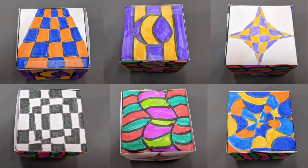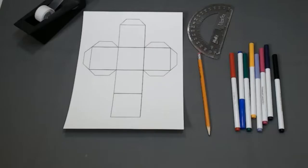We are going to need our opt-cube printout, a ruler, a pencil, scissors, fine tip markers, an optical illusion guide and clear tape.